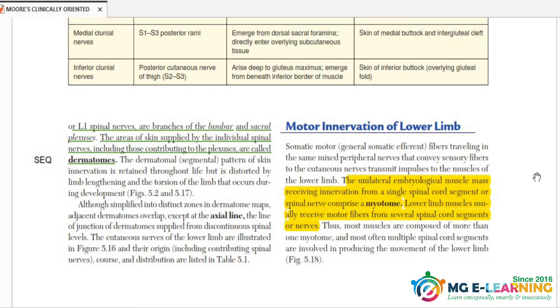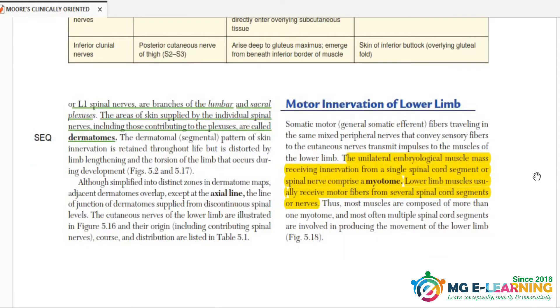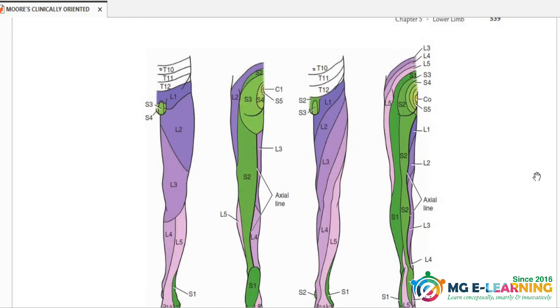Motor innervation of lower limb is not very important for SQ point of view. And now this diagram is important for dermatomes. It is very, very important - you have to know how to draw this diagram.